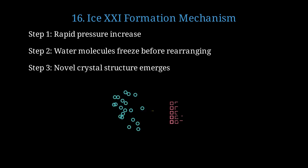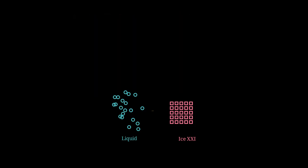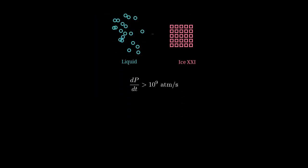Here we see the transition from disordered liquid water on the left to the ordered ice 21 crystal structure on the right. The pressure increase rate must exceed 10 to the 9th atmospheres per second to create ice 21. That's like going from normal pressure to the pressure at the deepest ocean trench in the blink of an eye.